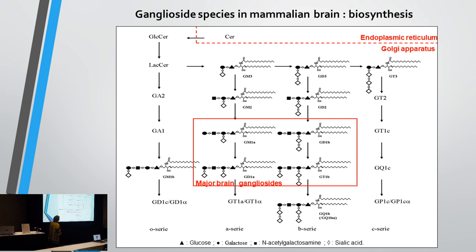I'm not going to go through the entire map of how each type of ganglioside is made — you can find it in any biochemistry book. What I want to show is that the starting molecule is ceramide. Ceramides are extremely important because they don't just play a role here; they play a role in the formation of many other molecules, and they increase or decrease depending on many diseases — most importantly, some types of cancers and traumatic brain injury.